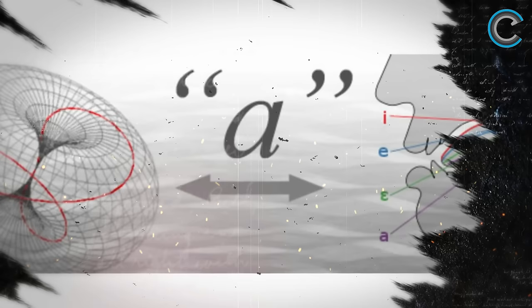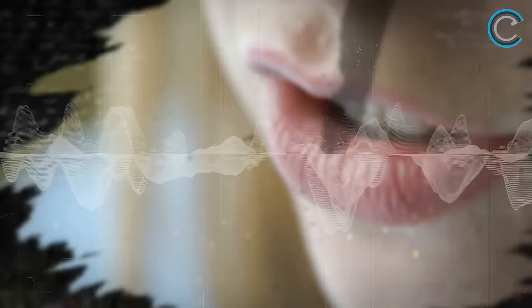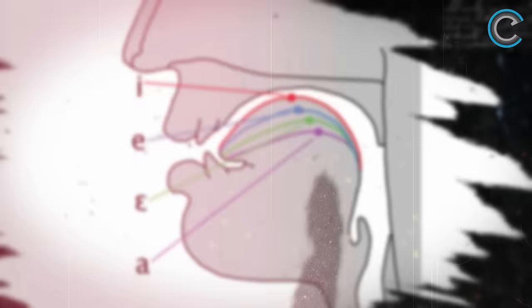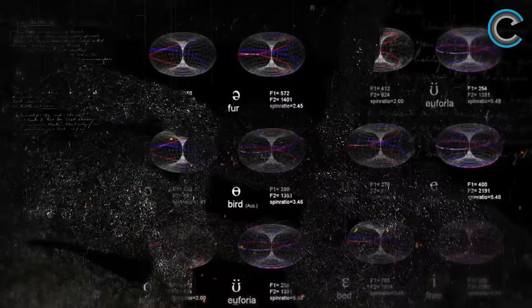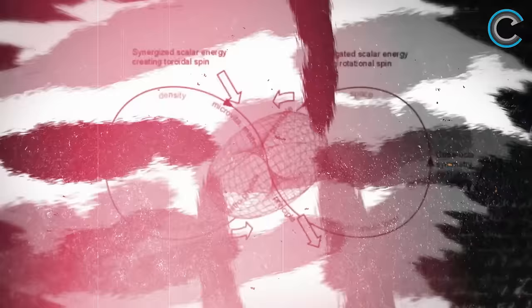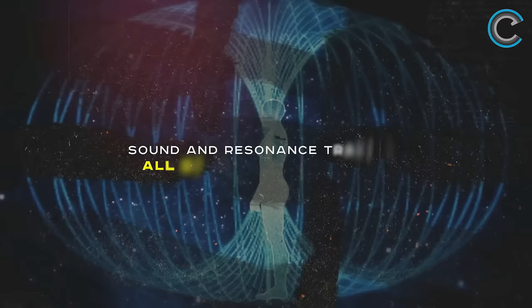This is what the toroidal fields look like that are created by the sounds we make when we speak. Phenomenal research has shown us the different toroidal shapes and fields of different letters and sounds, especially vowels. As we speak, these toroidal fields become scalar waves and scalar technology that permeate all of creation instantly because sound and resonance traverses all of creation instantly.